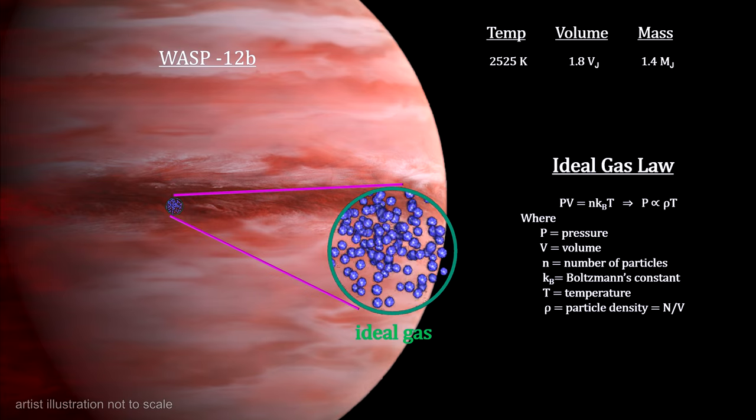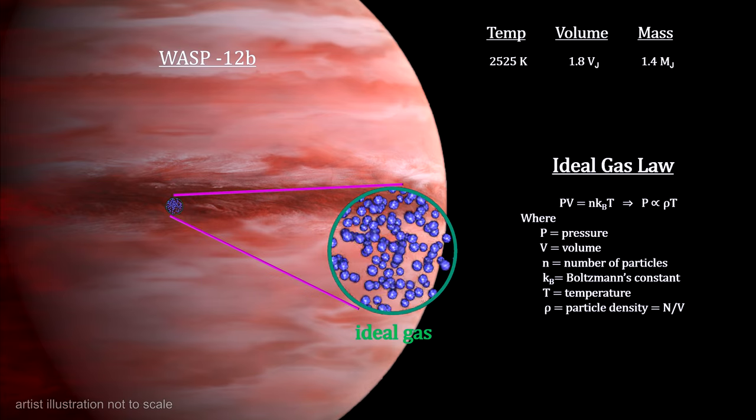WASP-12b is only 40% more massive than Jupiter, but it has almost twice the volume.